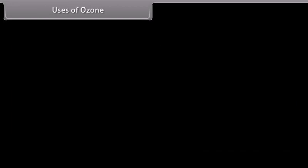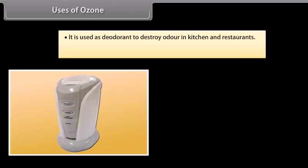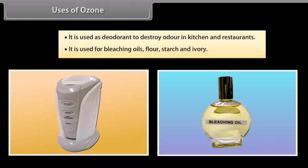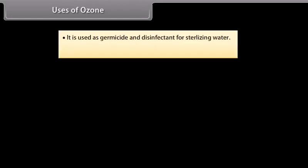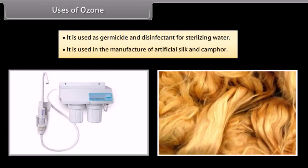Uses of ozone. The important uses of ozone are following: It is used as a deodorant to destroy odour in kitchen and restaurants. It is used for bleaching oils, flour, starch and ivory. It is used as a germicide and disinfectant for sterilizing water. It is used in the manufacture of artificial silk and camphor.